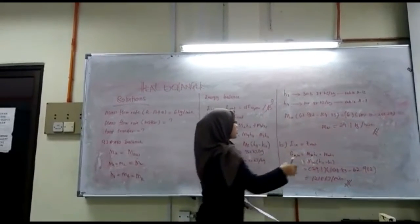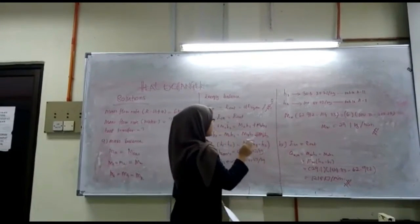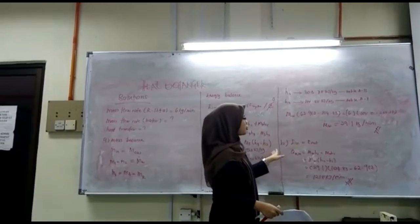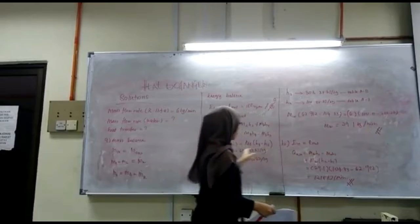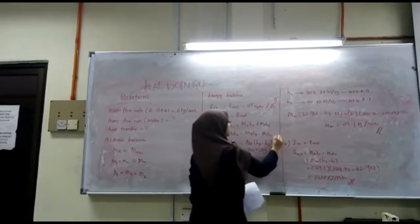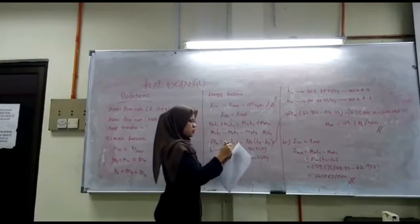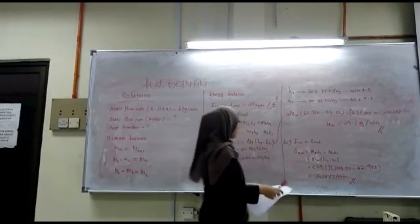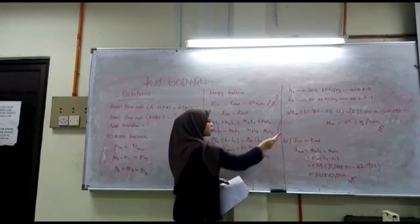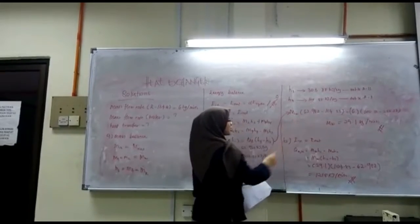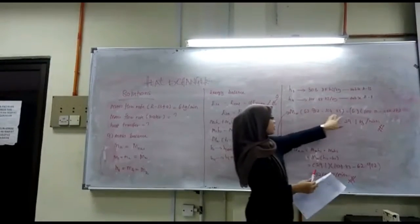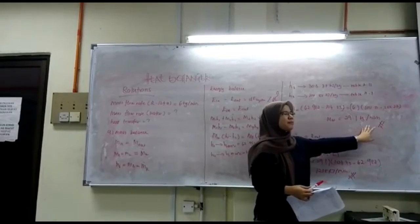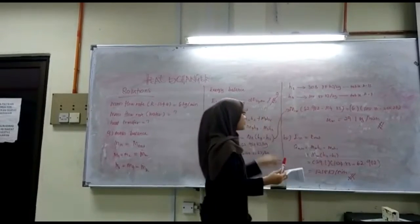Once we have all the enthalpy values, we substitute them into the equation. We already know the mass flow rate of the refrigerant, so we only need to find the mass flow rate of water. After solving, the mass flow rate of water is 29.1 kg/min. That answers part A.